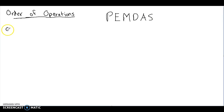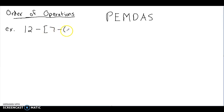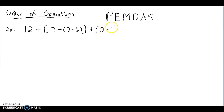Let's go through an example. We're going to do 12 minus bracket, 7 minus, and then in parentheses 3 minus 6. Close the bracket, plus, and then in parentheses 2 minus 3 to the third power.